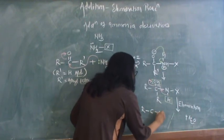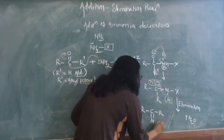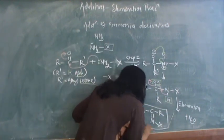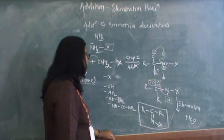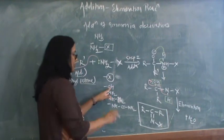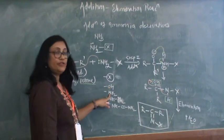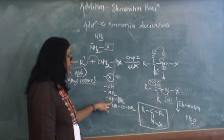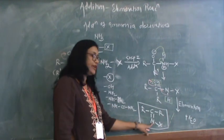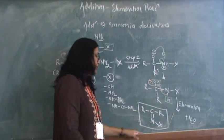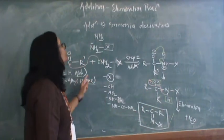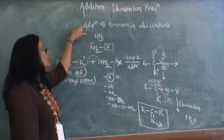And what product will you get? RCR prime double bond NX attached to this nitrogen. So this will be your product of this addition-elimination reaction. And depending upon what reagent you have used, whether you have used hydroxylamine, hydrazine, or phenylhydrazine, accordingly this product will have structure. This X will be attached to this N and remaining part of the molecule will be in this manner.